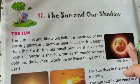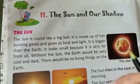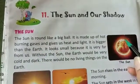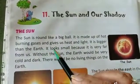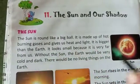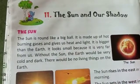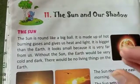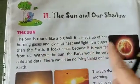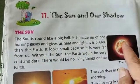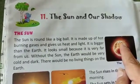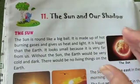The sun gives us heat and light. It is bigger than the earth. It looks small because it is very far from us. You might think the earth is big and the sun looks small, but that is wrong — the sun is bigger than the earth, and because it is very far away, it looks small.